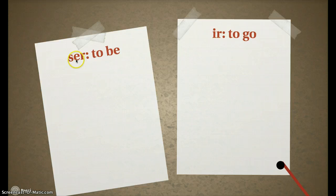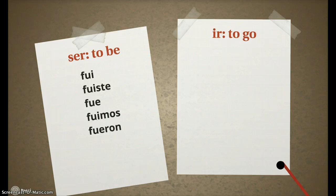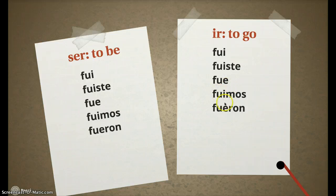Our next two are ser and ir. Ser means to be, and in the preterite it turned into fui, fuiste, fue, fuimos, fueron. That's very irregular — there's not even an S in there. How'd they come up with that? And then ir, to go, is fui, fuiste, fue, fuimos, fueron. They're the same conjugation.